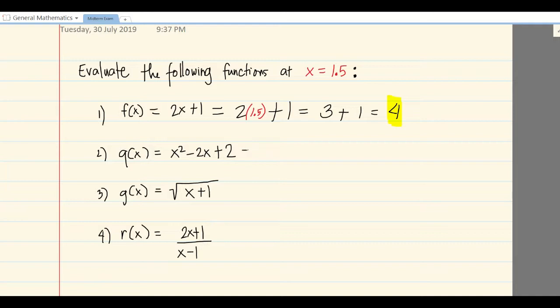So the solution is 2 times 1.5 equals 3, plus 1 equals 4. Okay, very good, so that's the answer. Now number 2, copy the equation: x² - 2x + 2, then erase the x and replace it with the given.